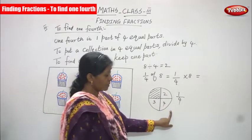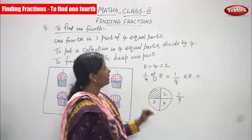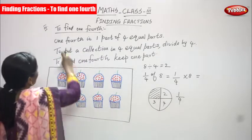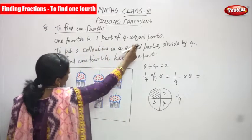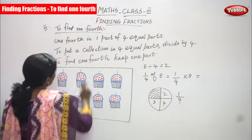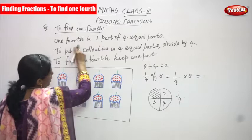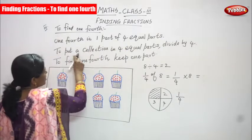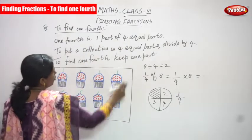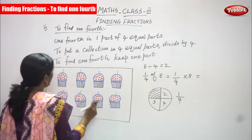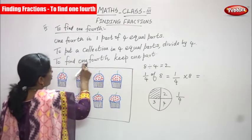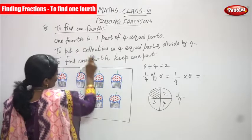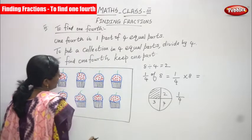So total number of parts is the denominator, and what we have taken and shared is only one part — that is called one by four, otherwise we can call it one fourth. One fourth means one part of four equal parts. To find one fourth, divide the collection into four equal parts, then keep one part.